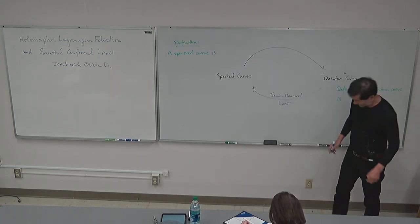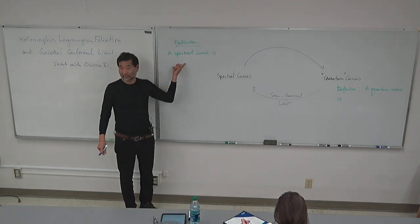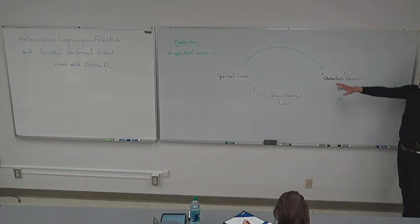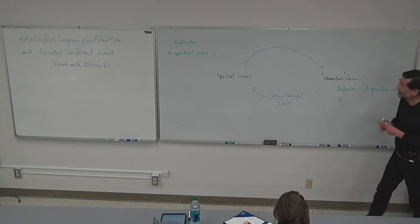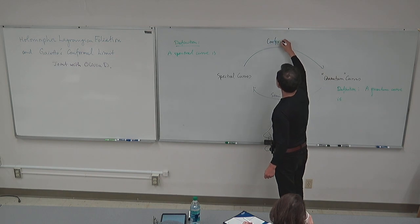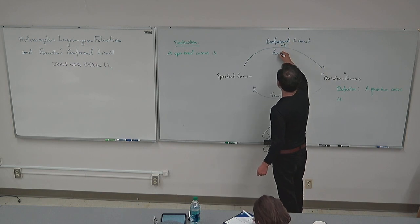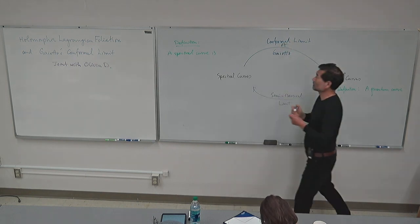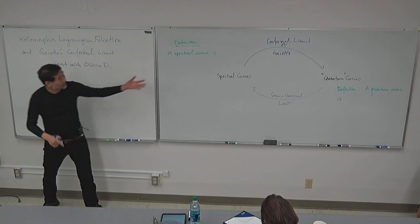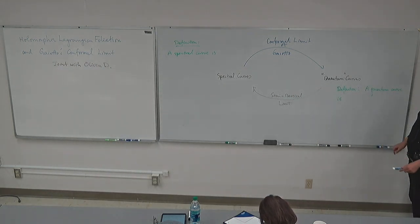When you are given a spectral curve, can you get a quantum curve? Well, to do that, you have to give a mathematical definition of spectral curve, and then a mathematical definition of quantum curve. Then, under a reasonably good definition and framework, yes, there is such a procedure, which is called the conformal limit of Gaiotto. The purpose of this talk is to really explain this concept, place it in the geometric situation, and show how this construction goes.